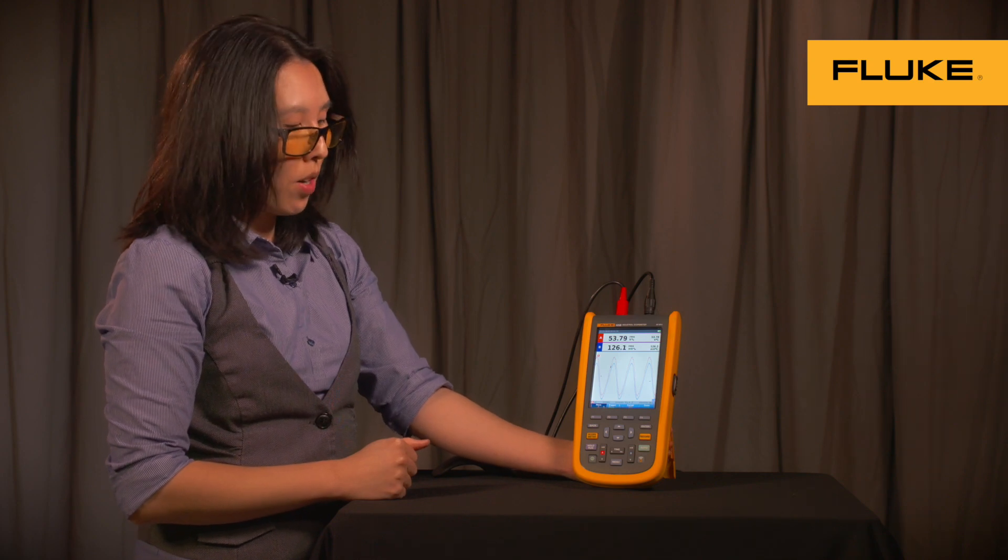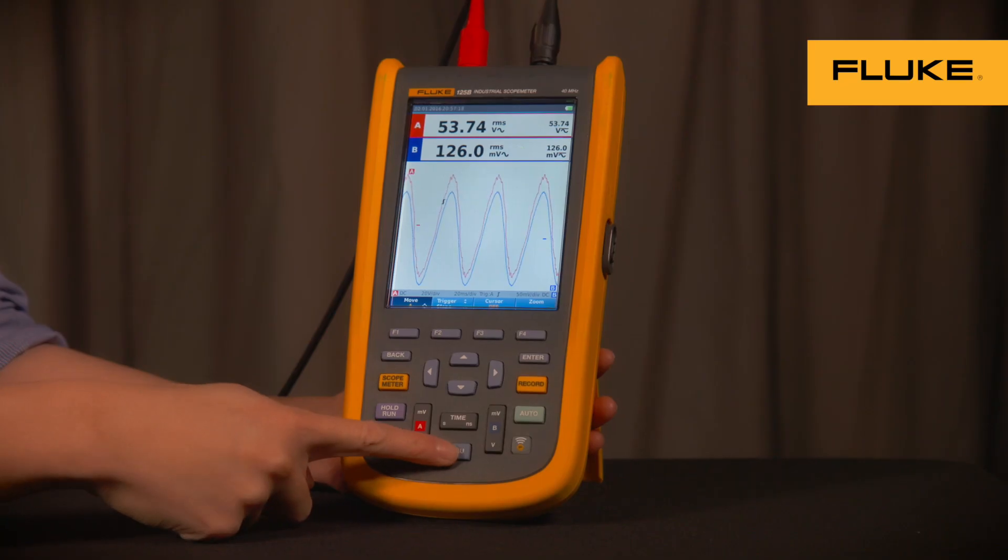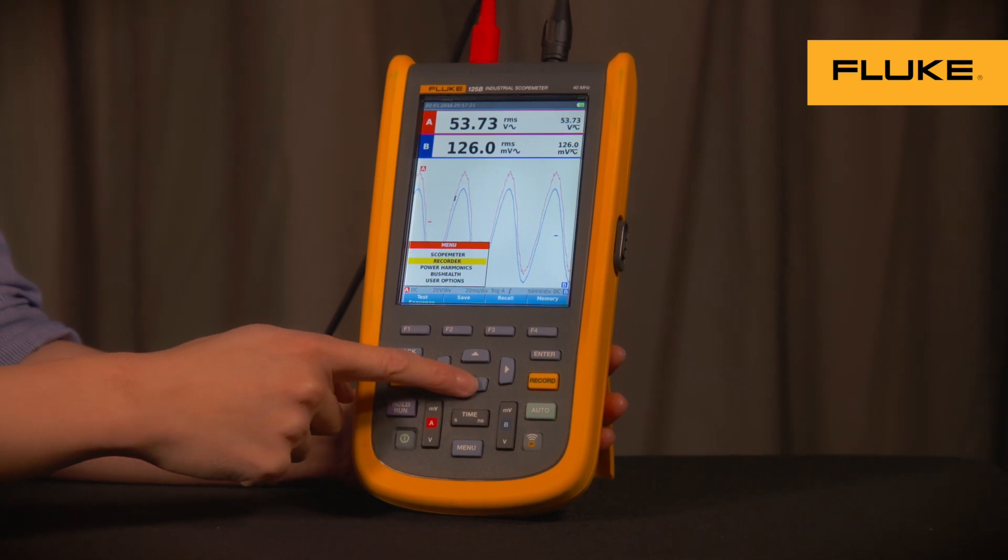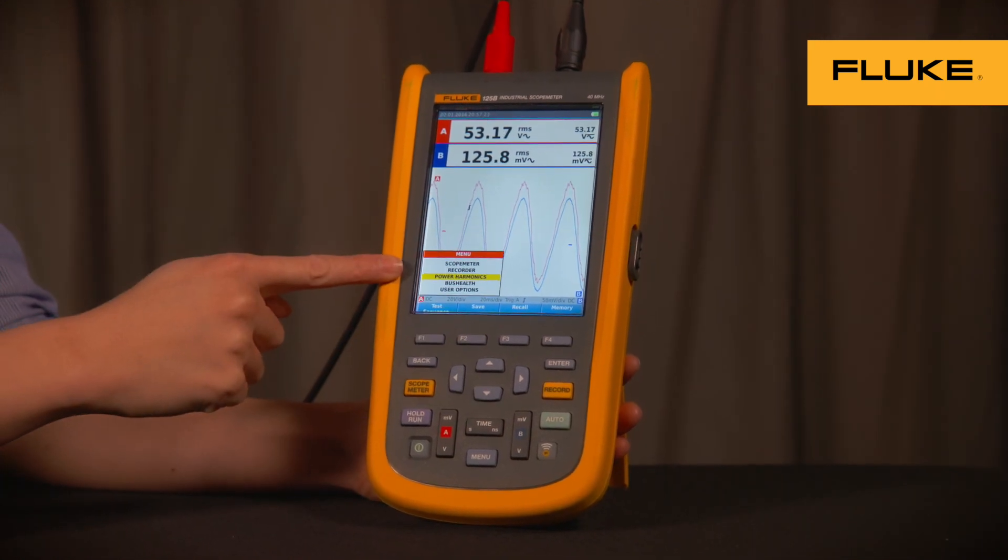To get to the power and harmonics mode, press the menu button, use the up and down arrows to get to power harmonics, then press Enter.